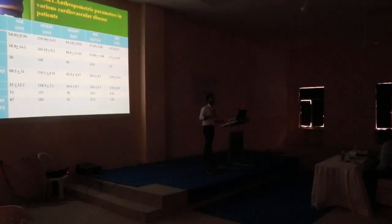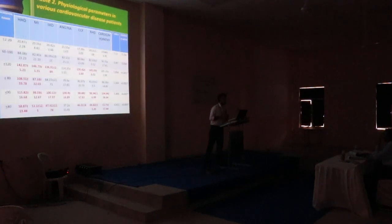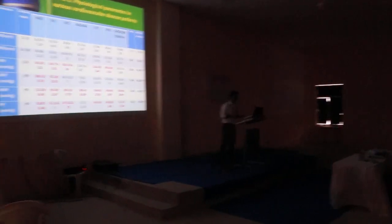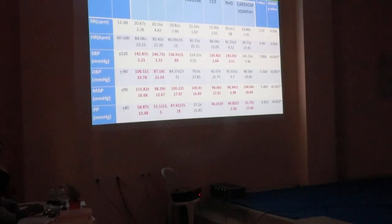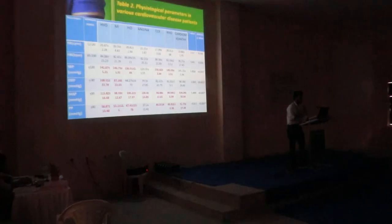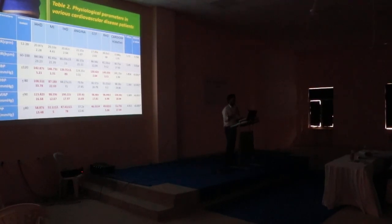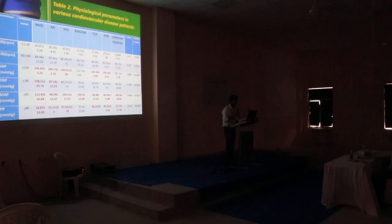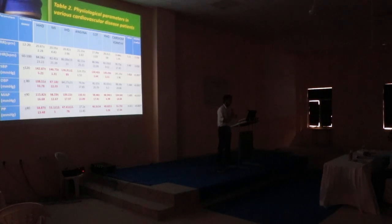Results: the first table covers anthropometric parameters in different cardiovascular diseases, where no significant changes were found. The second table covers physiological parameters in various cardiovascular disease patients. I observed that in hypertensive heart disease, myocardial infarction, ischemic heart disease, congestive cardiac failure, and rheumatic heart disease, systolic blood pressure is higher than normal values. Diastolic blood pressure is seen high in hypertensive heart disease and myocardial infarction. Mean arterial pressure is high in all the diseases included. Pulse pressure is seen high in all diseases except angina pectoris.